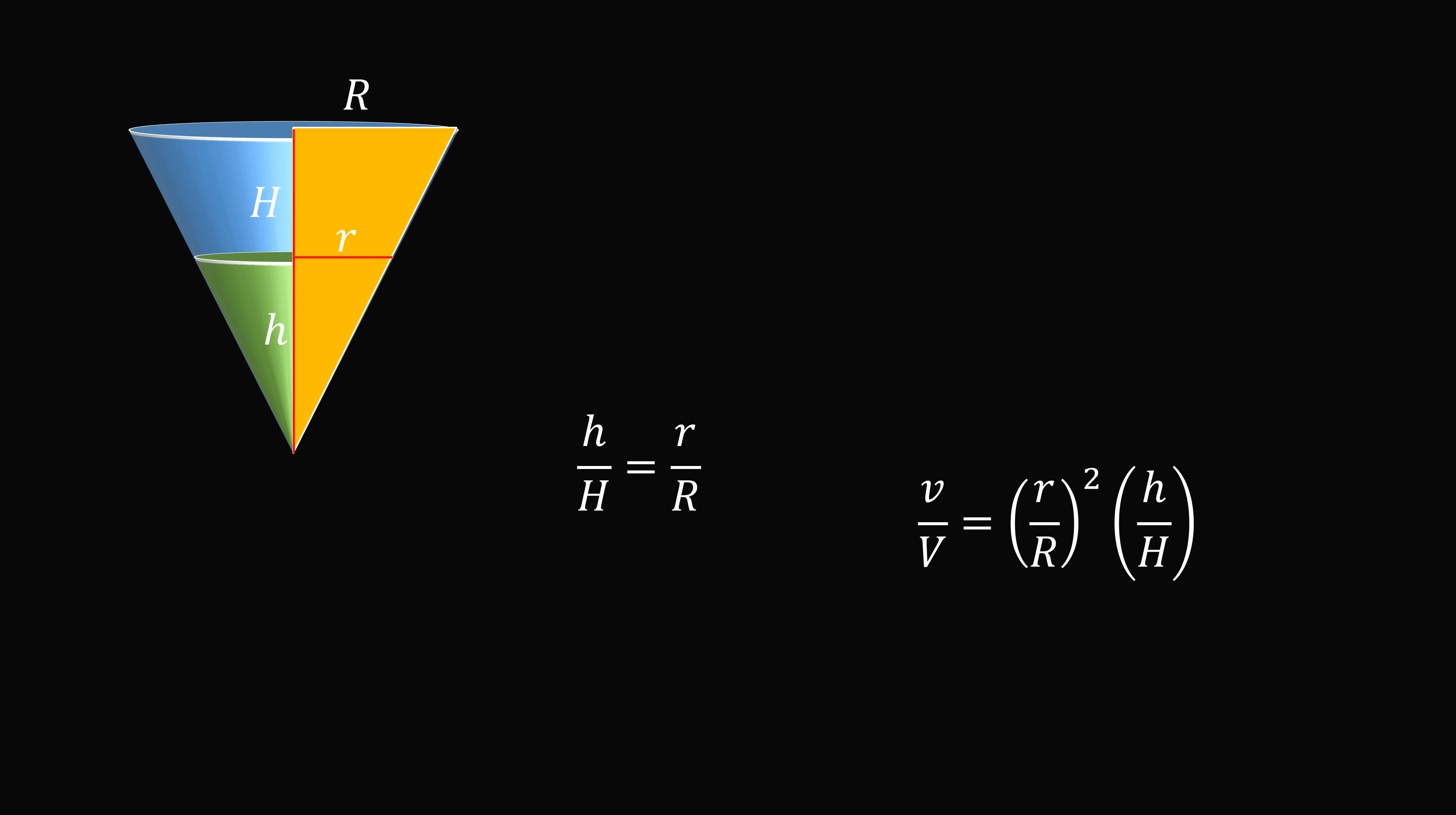So let's continue simplifying. We know that the ratio of the radii is exactly the same thing as the ratio of the heights. So we can substitute this term here for the ratio of the heights. We then will simplify and we get that the ratio of the volumes is equal to the cube of the ratio of the heights. And that's precisely what we want to show.